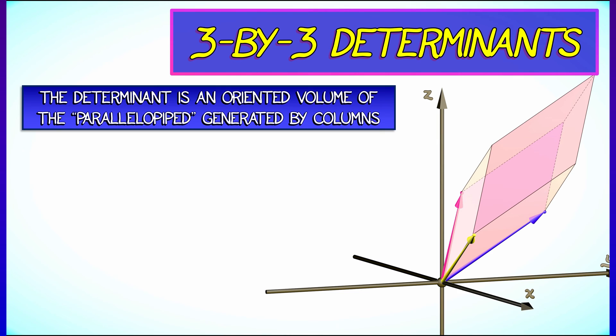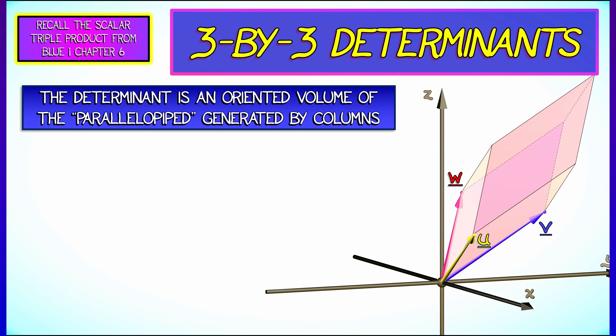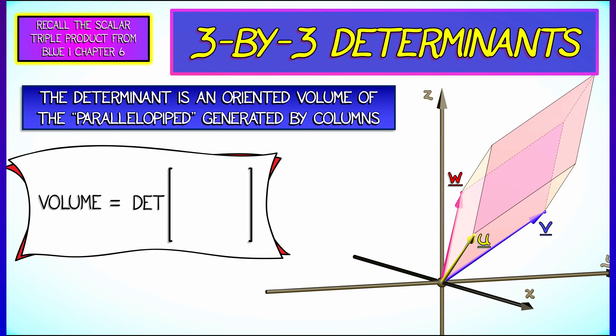I claim that the determinant of a 3x3 matrix is really a volume, or an oriented volume, of the parallelopiped generated by the columns. Do you remember this back from chapter 6? We looked at parallelopipeds, we looked at the scalar triple product.